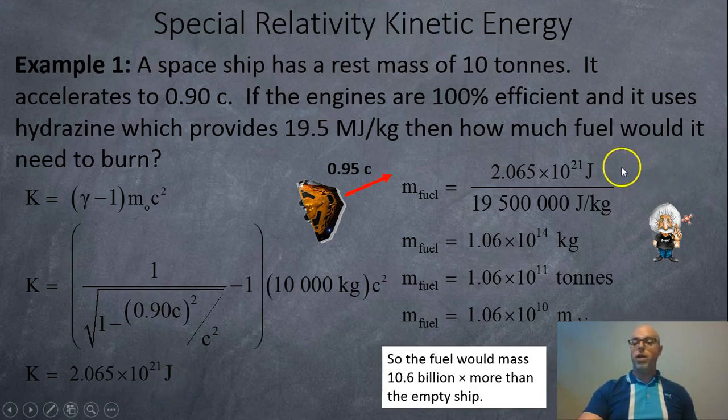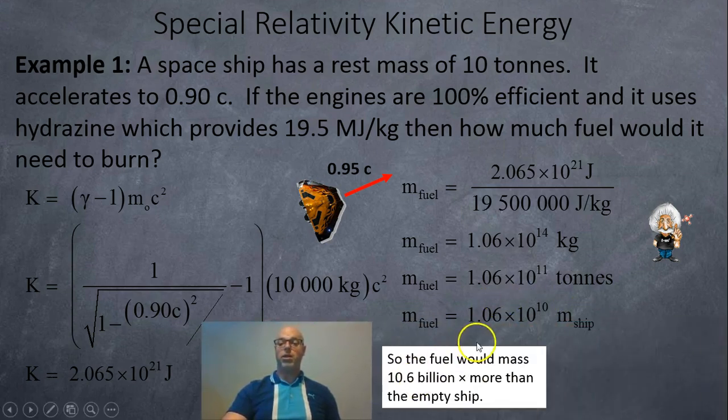Now if you take that energy and divide by the joules per kilo, you'll find something crazy here. It takes 1.06 × 10¹⁴ kilograms of fuel. That's 106 trillion kilograms. And if you divide by 1,000, that's 1.06 × 10¹¹ tons. If you divide by the mass of the spaceship, which is 10 tons, that means your fuel is 1.06 × 10¹⁰, that's 10.6 billion times more massive than your spaceship.